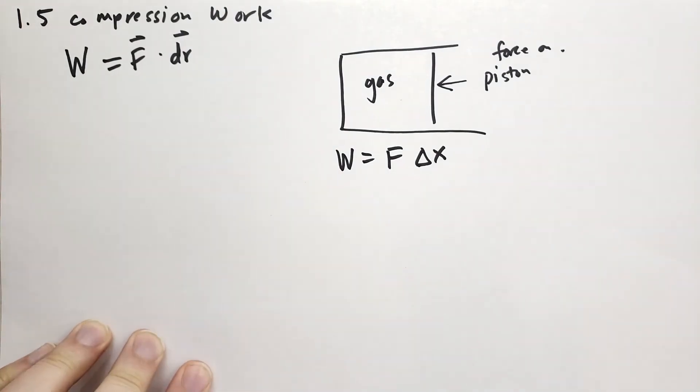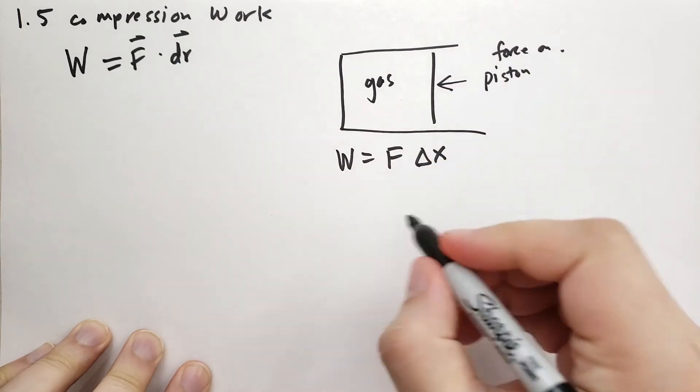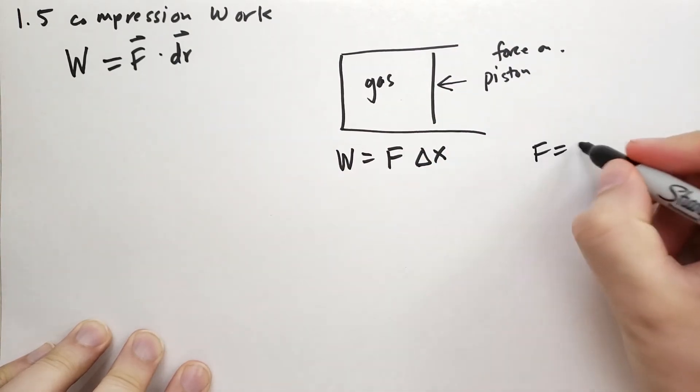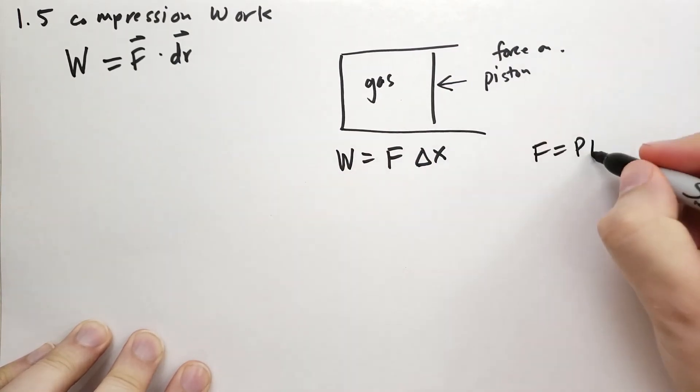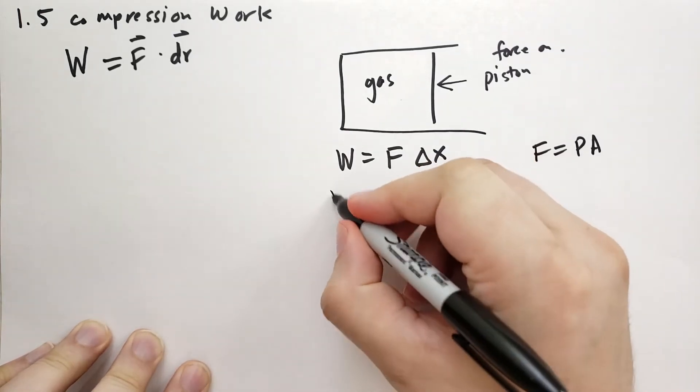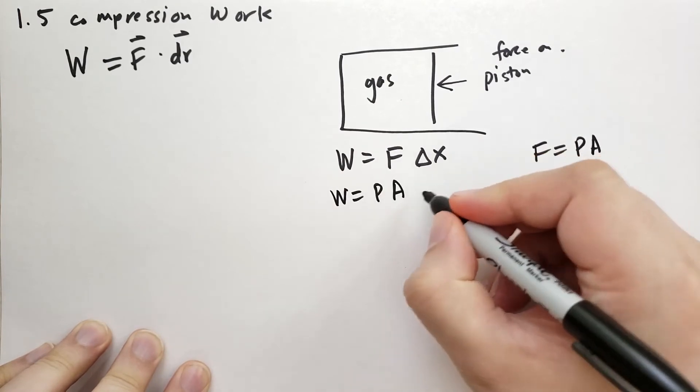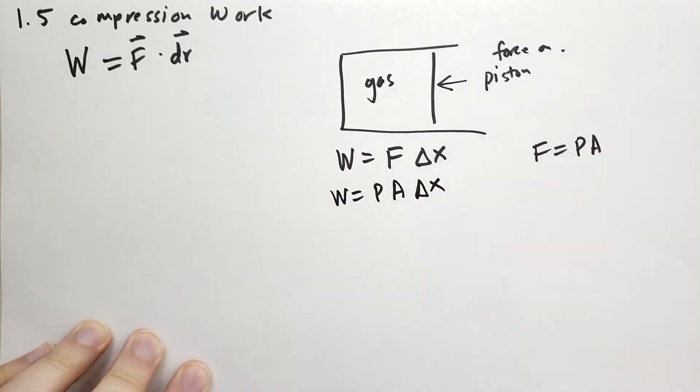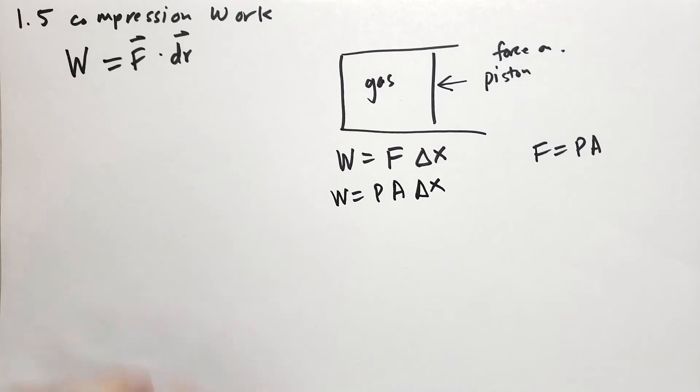Because we're talking about pressure and we have a piston, the force on the piston is actually equal to the pressure of the gas times the area of the piston. And so we can replace this formula with the work is equal to the pressure times the area of the piston times the change of position of that piston.